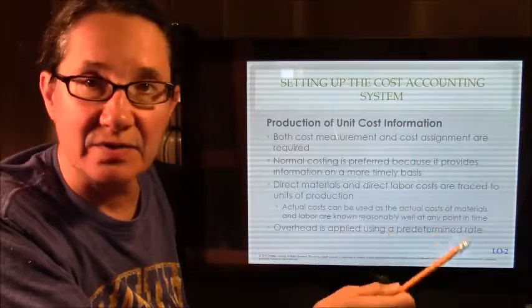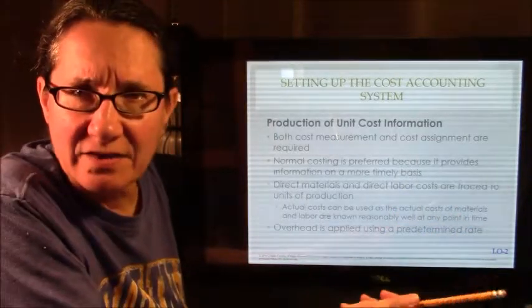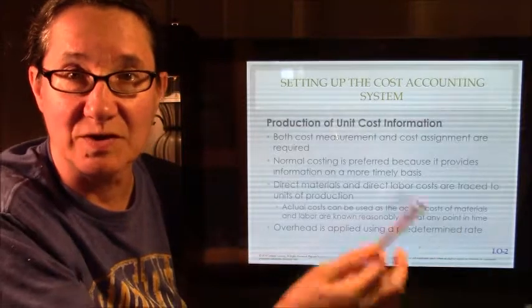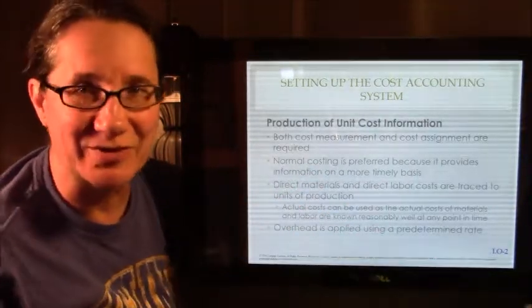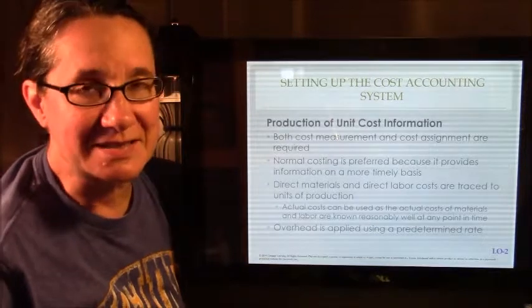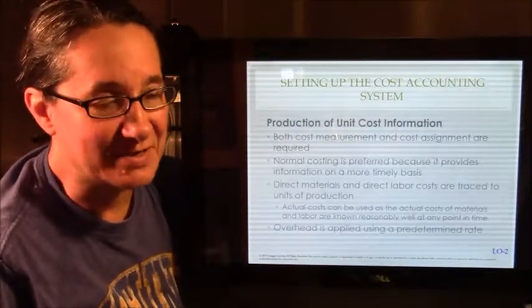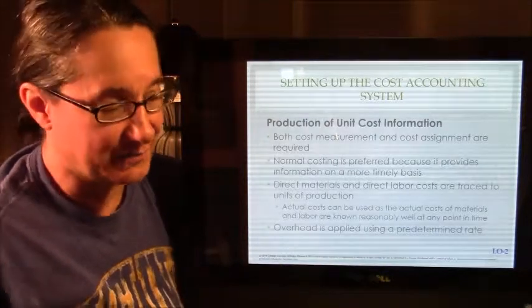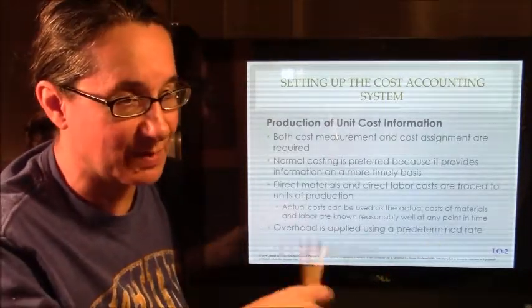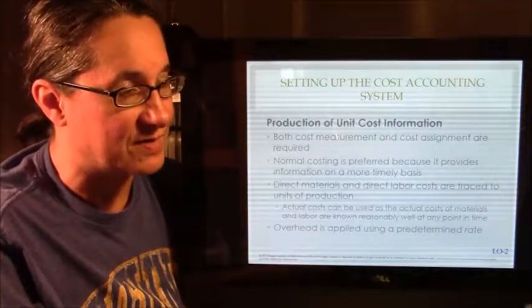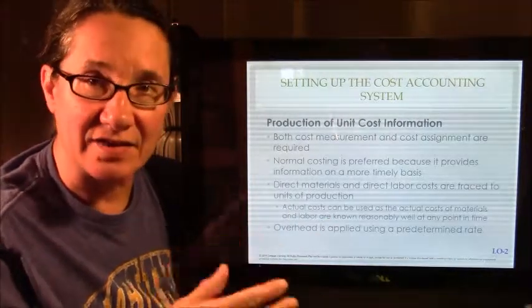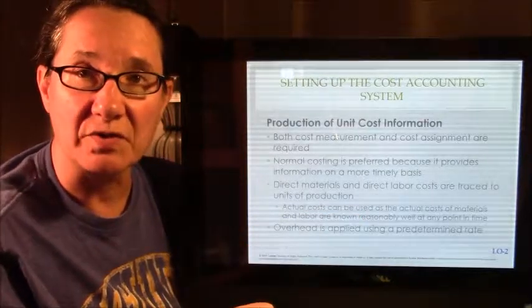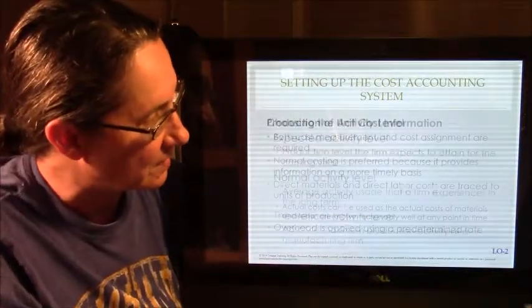Direct materials and direct labor, easy peasy. You track that, you know how many materials went in to make the thing, assuming you're tracking them, which you should be doing if you're doing cost accounting. And you know how many hours your labor worked, that's pretty easy. The thing that's hard is the overhead. So overhead gets applied using a predetermined rate in normal costing. And that lets us know how much that job costs or how much it would cost in case I wanted to put a bid in for something.